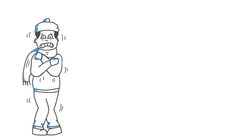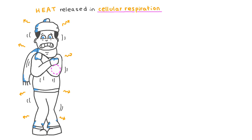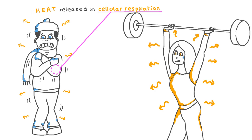Have you ever wondered why we shiver when we are cold? Shivering is actually our muscles contracting more to release more heat in order to warm us up. In fact, muscle contraction accounts for almost 85% of the total heat produced in your body. This is because our muscle cells carry out a lot of cellular respiration to release the energy necessary for contraction, and this process releases heat. This helps to explain why we get so warm when we exercise, as so many of our muscles are continuously contracting and respiring.